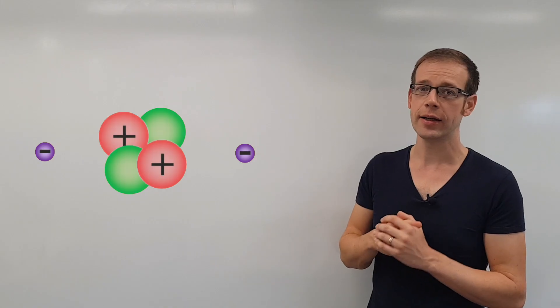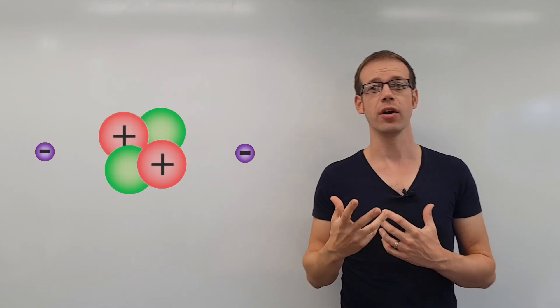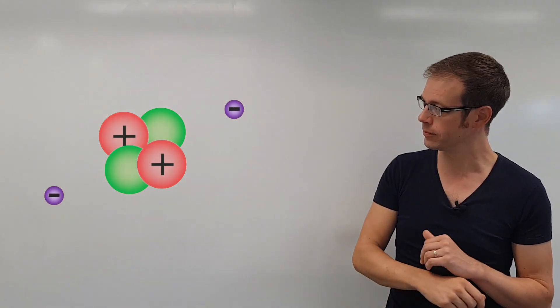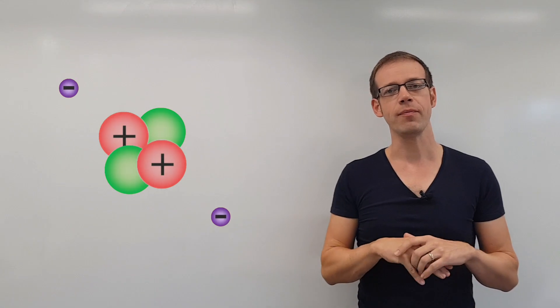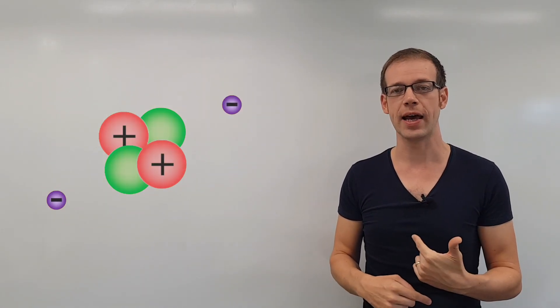And then around the outside we have the electrons, and those electrons are actually in constant motion. So let's just get that spinning. So we can see there that the electrons are spinning around and around the outside of the atom.